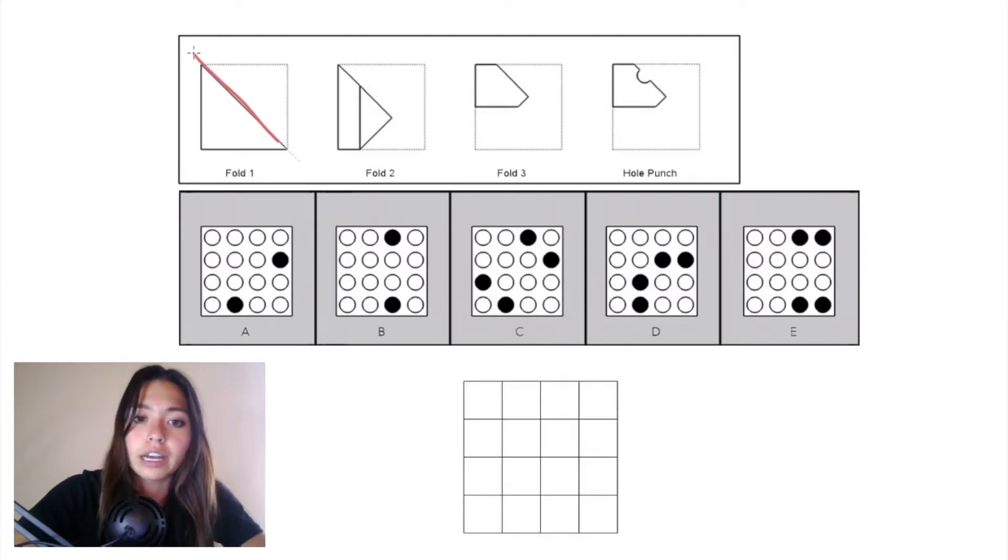Starting in fold one, we have a diagonal plane and we're folding the top right corner of paper down to the bottom left. In fold two, we have another diagonal plane and we're folding up into this triangle.